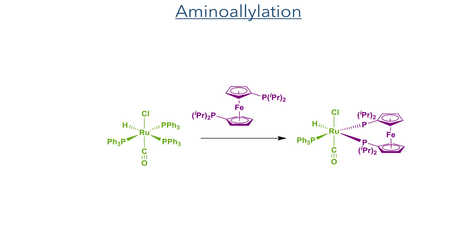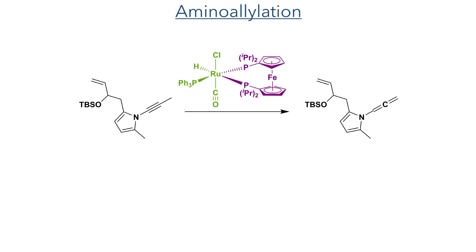This alkyne was required for the amino allylation reaction. The active catalyst for this reaction is formed from the reaction of a ruthenium hydride complex with diisopropylphosphine ferrocine. This displaces two of the triphenylphosphine ligands to form the ruthenium chelate. This catalyst first reacts with the alkyne, isomerising it to an allene.